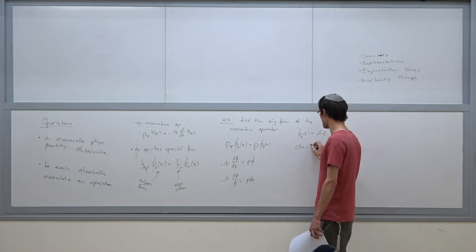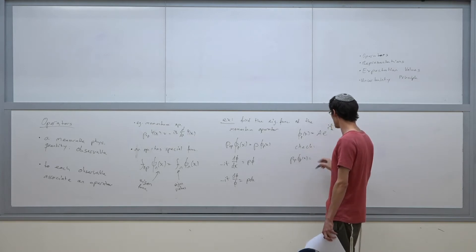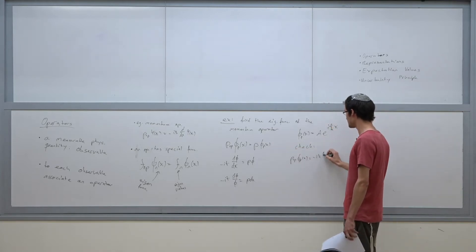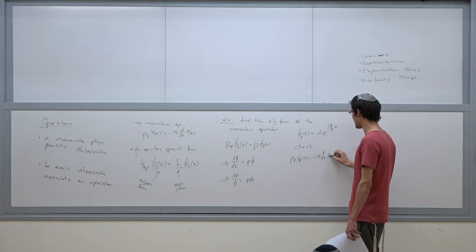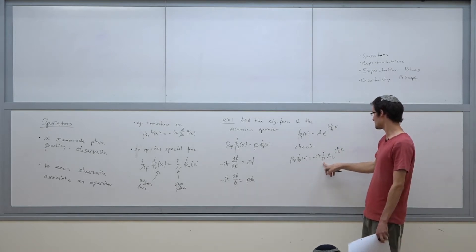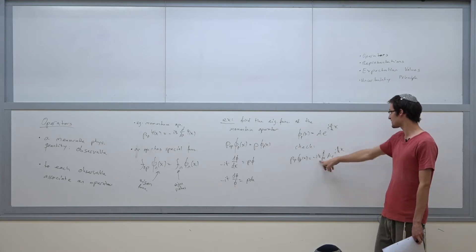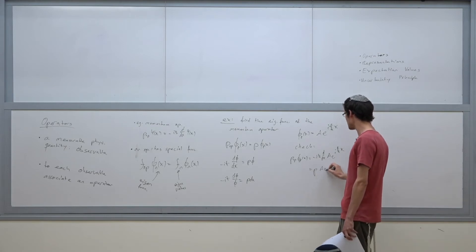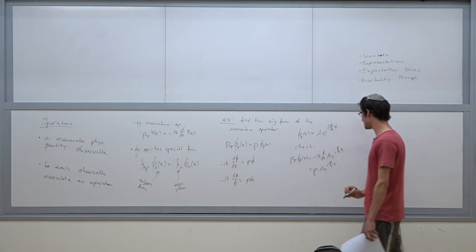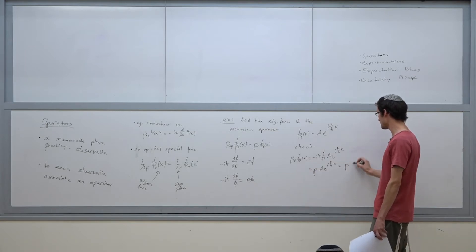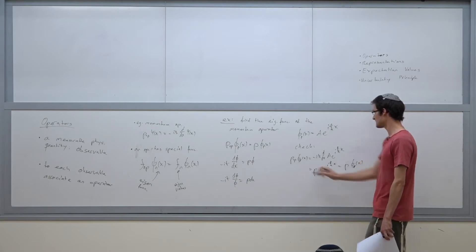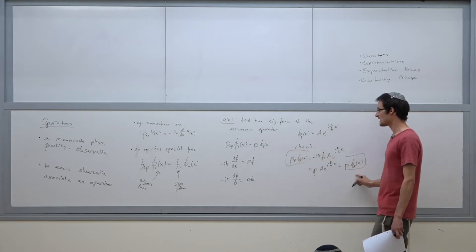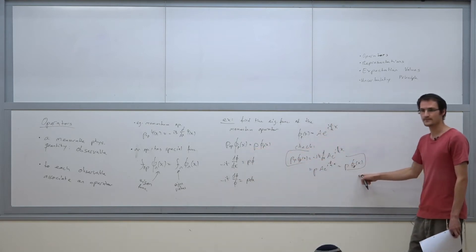We can check this: when the p-operator acts on φ_p(x), we apply -iℏ d/dx to e^(ipx/ℏ). Taking the derivative brings down ip/ℏ. The ℏ cancels, and the i and minus-i give one, leaving p times the function — which is exactly φ_p. So the eigenvalue equation is satisfied. Measuring the quantity in the lab is equivalent to applying the operator to the wave function. We can also insert the relation p = ℏk, writing the eigenfunctions as e^(ikx) — the eigenfunctions of the free particle, which we saw last week.